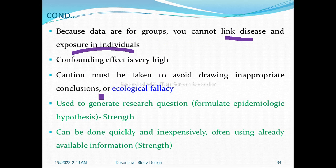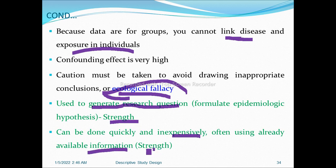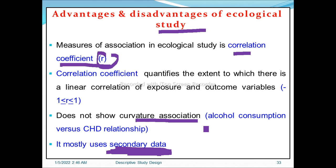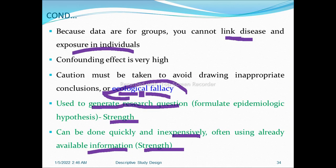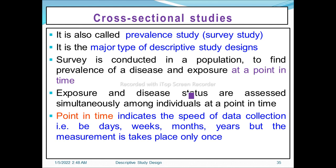Caution must be taken to avoid drawing inappropriate conclusions — called ecological fallacy. Atomistic fallacies happen in case reports and case series, but ecological fallacies happen in correlational or ecological studies. Strengths of ecological studies include: generating research questions, formulating preliminary hypotheses, and being done quickly and inexpensively using available information. The other characteristics are limitations or weaknesses.